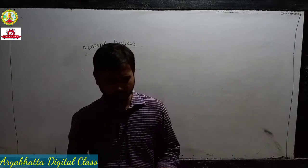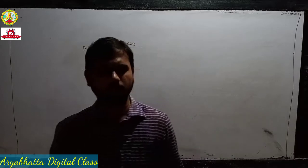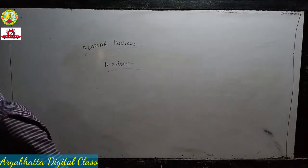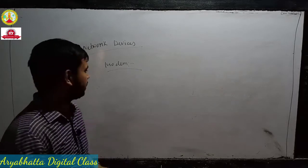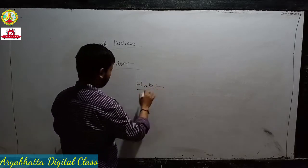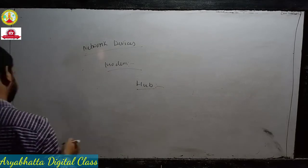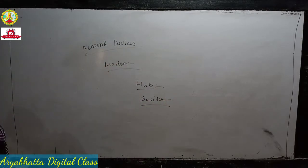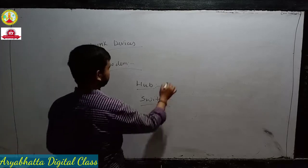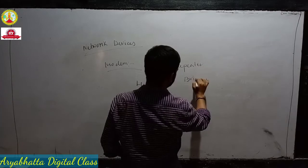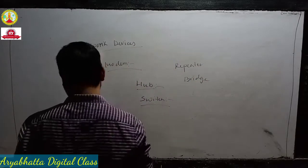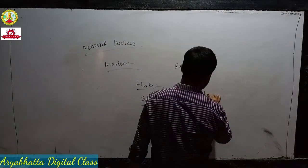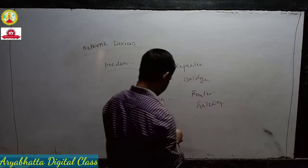Next is hub, then switch, then repeater, bridge, then router and gateway. These are all the network devices. They are all hardware devices. Switches are devices used for some different connection purposes. The difference between all these devices comes in the connection technique.